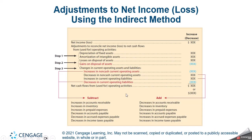Here is our operating section. The first line item is net income, which we pick right off the income statement. Step one: we add back depreciation of property, plant, and equipment, and amortization of any intangible assets. Those are always the first two things because both are non-cash — they're just journal entries done at end of year — so we want to add those back on the cash flow statement.